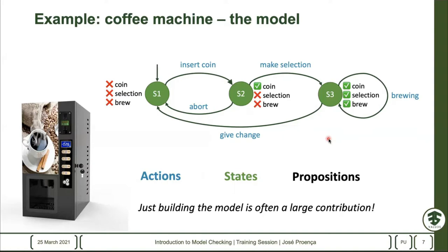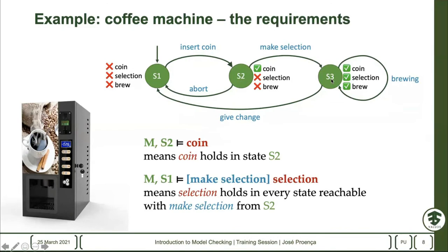With respect to requirements — these are properties. We can write something like: does model M in state S2 satisfy the proposition 'coin'? Here the answer will be yes because coin has a check mark next to it. Another possible property could be: does this model in state S1, if we make any possible way of making the action 'make selection', will the proposition 'selection' hold? These formulas can contain more complex things including actions in the middle.